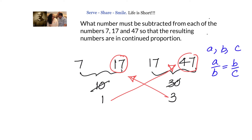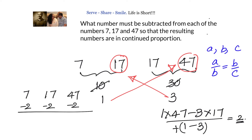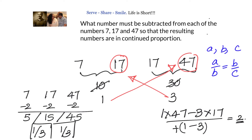Compute (1×47 − 3×17) / (1 − 3) = (47 − 51)/(−2) = (−4)/(−2) = 2. So x = 2. Subtracting 2 gives 5, 15, 45. Checking: 5/15 = 1/3 and 15/45 = 1/3. Both ratios are equal, so the answer is correct.